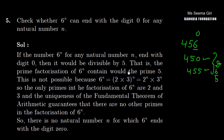It means the prime factorization should contain 5. But this is not possible because the prime factorization of 6 is 2 into 3. So 6 raised to the power n equals 2 raised to the power n multiplied by 3 raised to the power n.